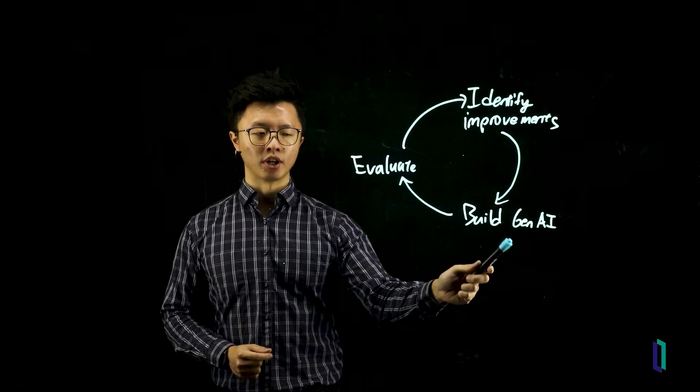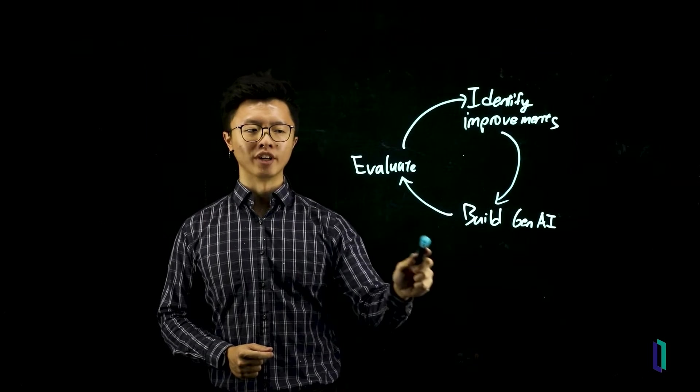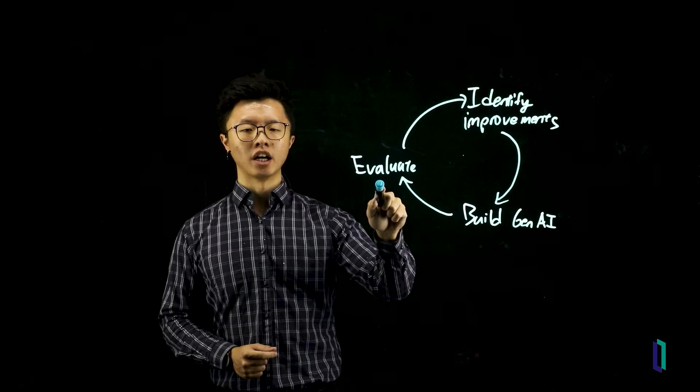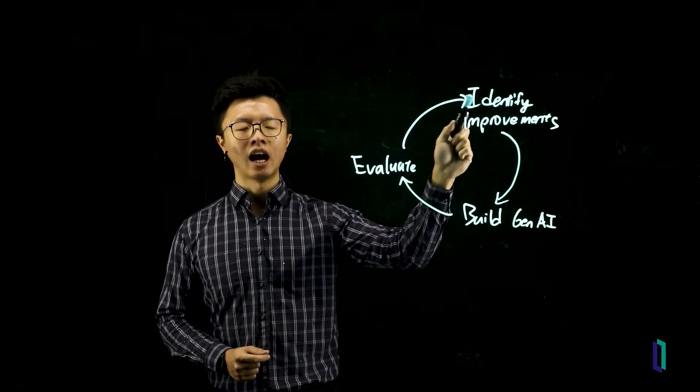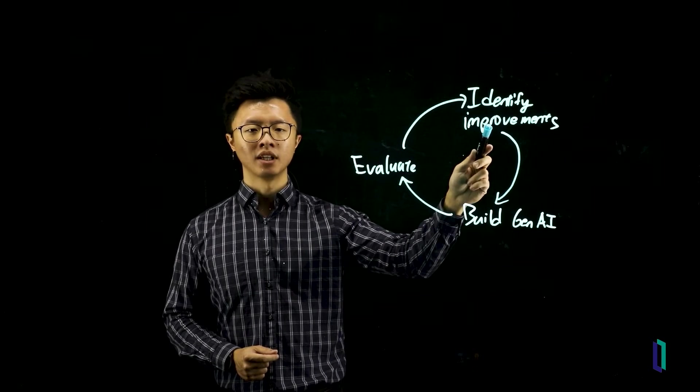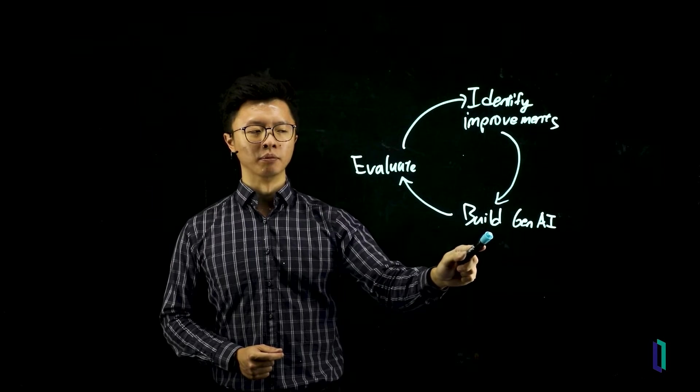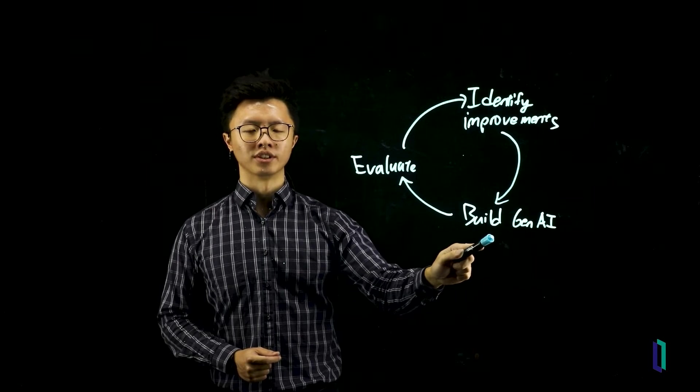The simplest and most effective way to structure your project is just like this. You start with building your Gen AI project. You immediately go to evaluate it, and then you conduct some error exploration and identify how best to improve the system before you go back to introducing the next component or improvement to the system.